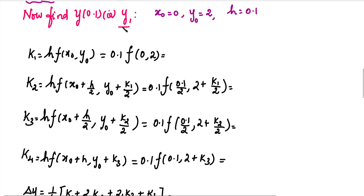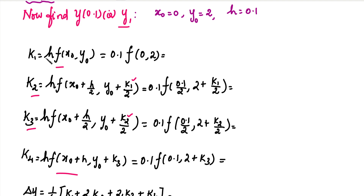In the first step, for y1 calculation: k1 formula is h into f(x0, y0); k2 formula is h into f(x0 + h/2, y0 + k1/2); k3 uses the same structure with k2 in place of k1; and k4 has different x and y values. We will use the shortcut method with the calculator, storing all k1, k2, k3, k4 answers.